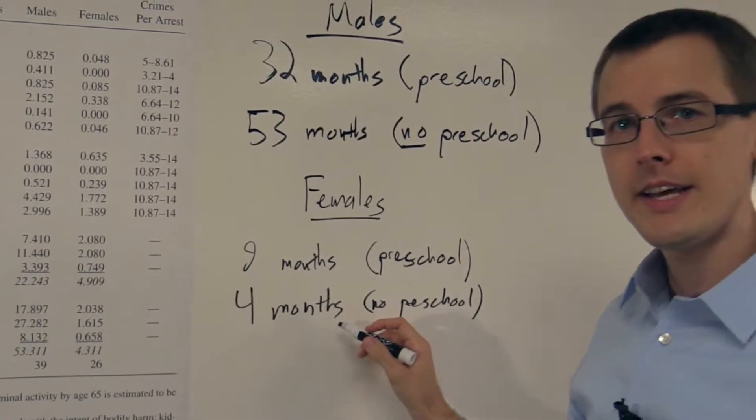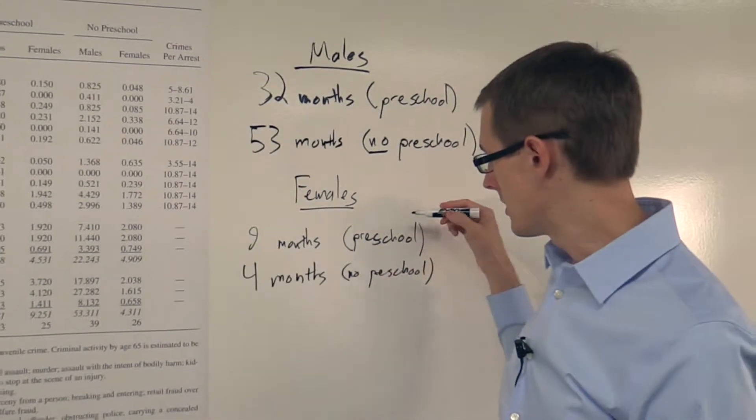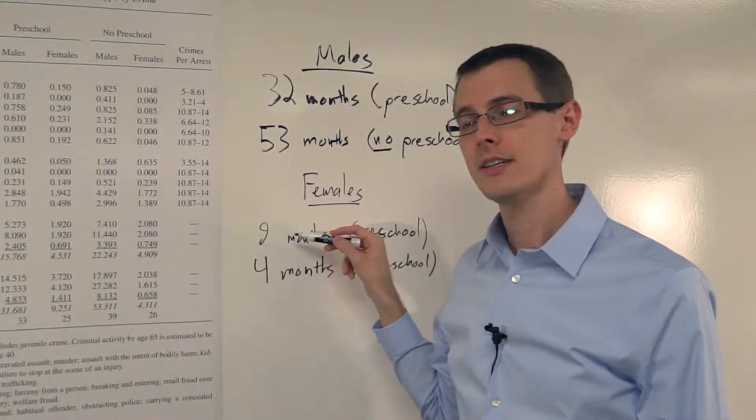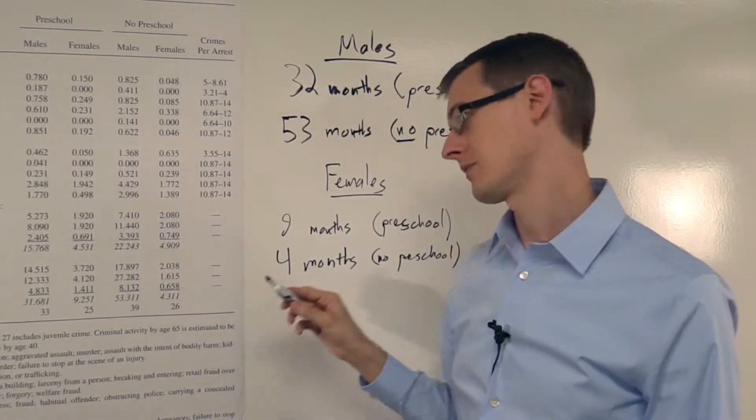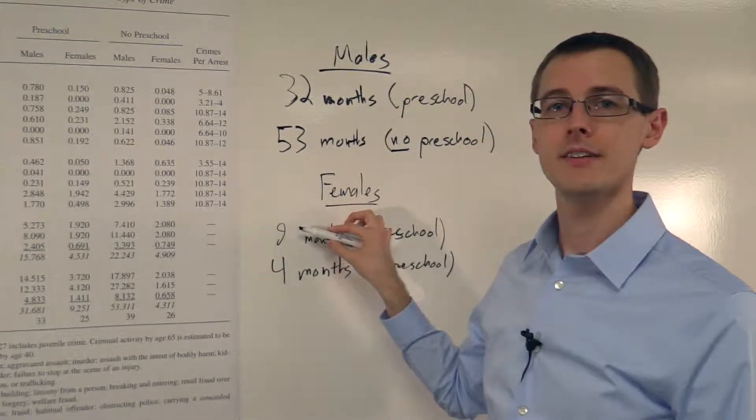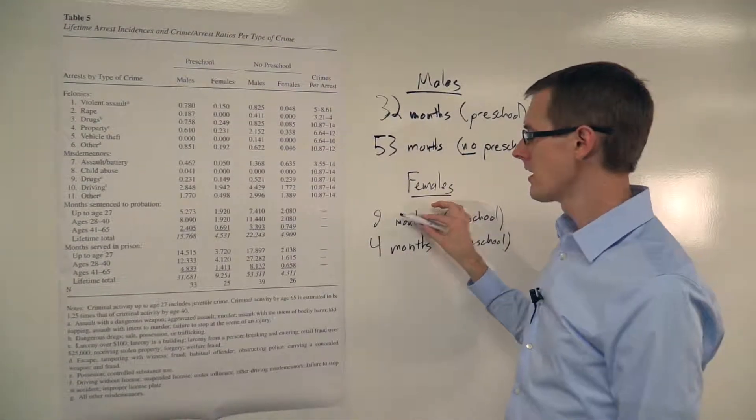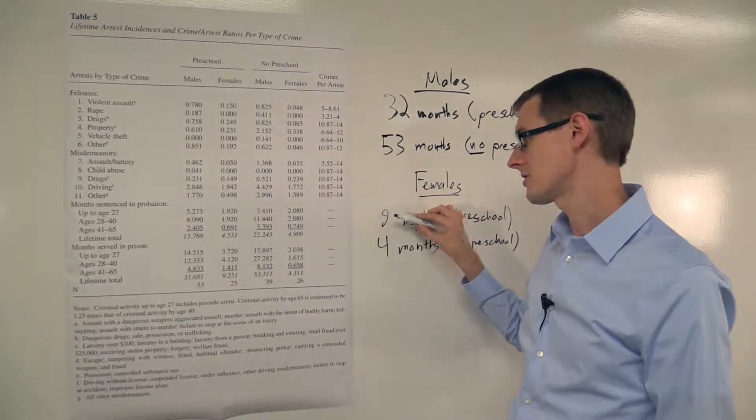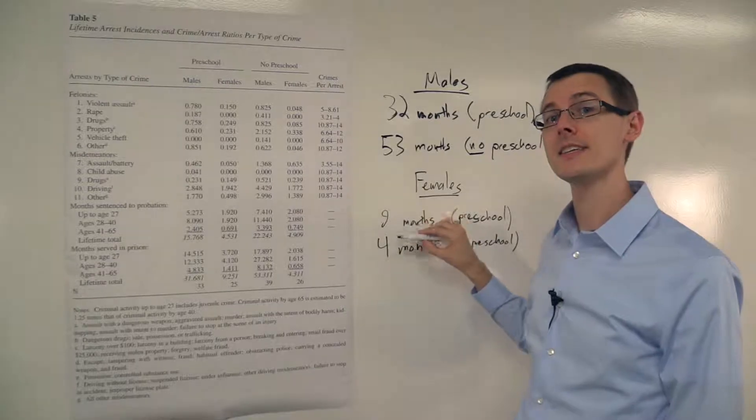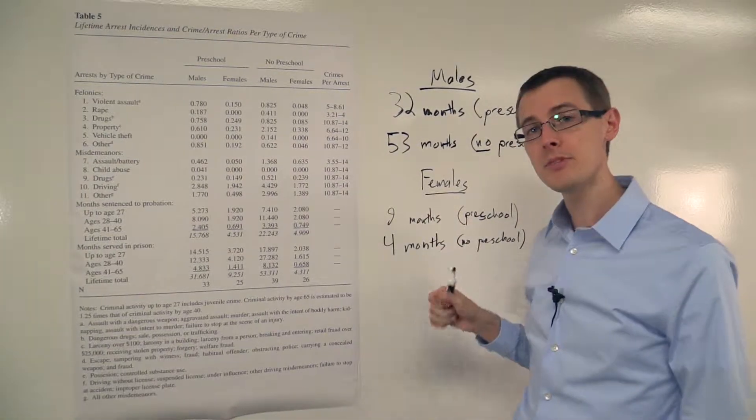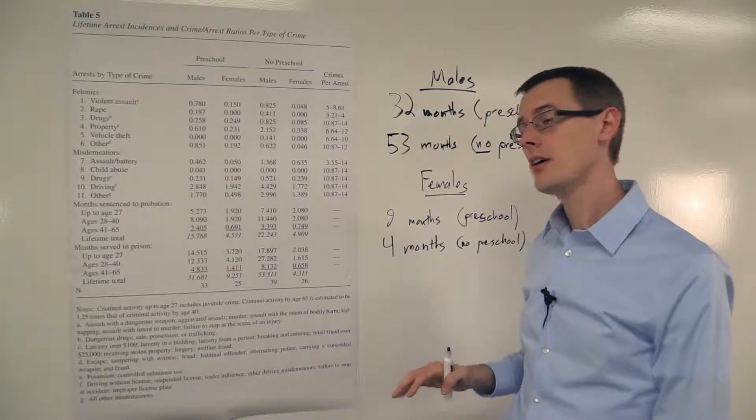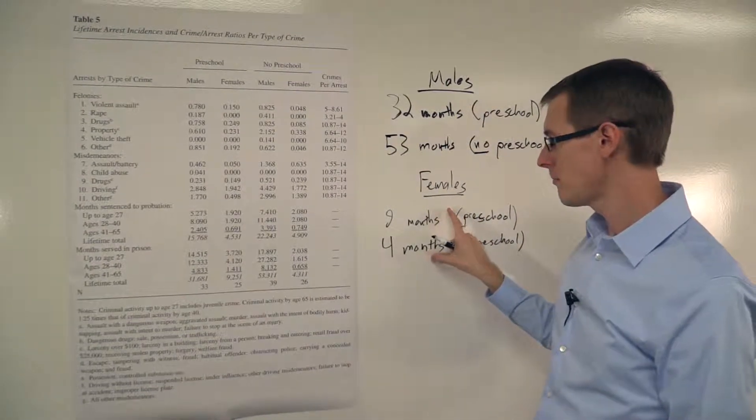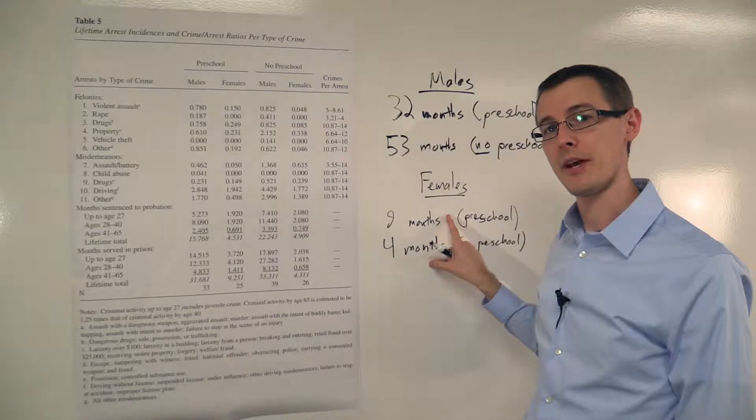So from this, it looks like the treatment getting preschool actually increased the number of months that females spent in prison on average, from four up to nine. Well, later on we'll talk about maybe this actually isn't a true treatment effect. Maybe this is just noise. Maybe this isn't statistically significant because our sample sizes here are quite small. And maybe this is a true treatment effect.